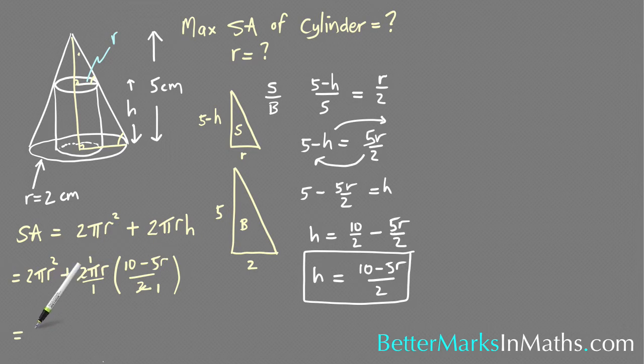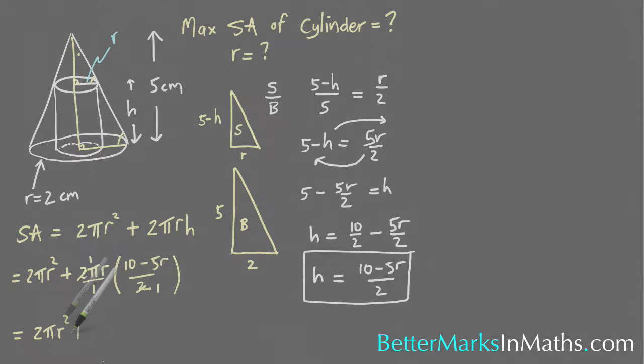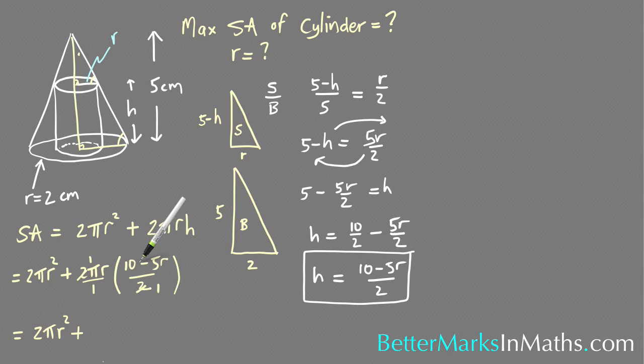And then you're left with 2πr² and then πr times both of those on the top, so you're going to get 10πr and then minus 5πr². And then 2πr² minus 5πr² is -3πr² plus that.